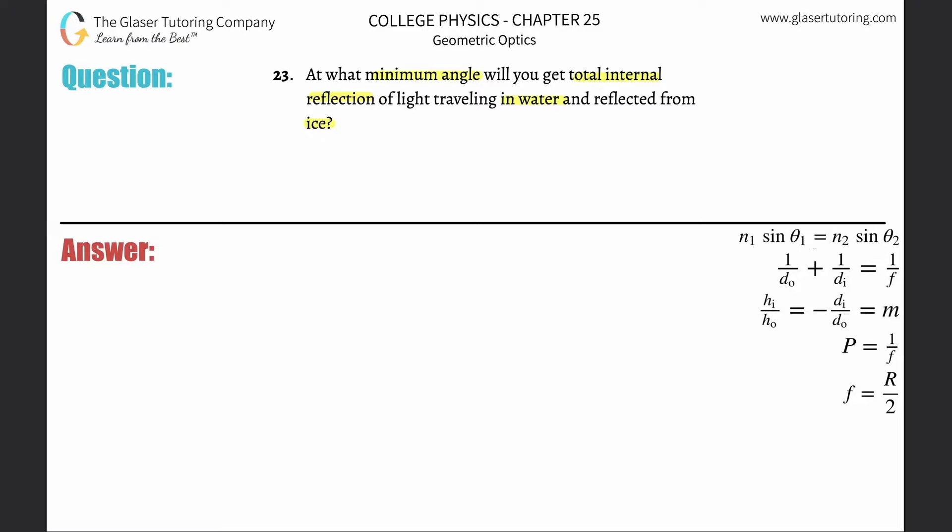So anytime they're talking about total internal reflection, they're talking about an angle of refraction which is 90 degrees. Check out number 20, I went through an analysis of how to think through this problem. Anytime they're talking about total internal reflection, they're really asking you for the critical angle.